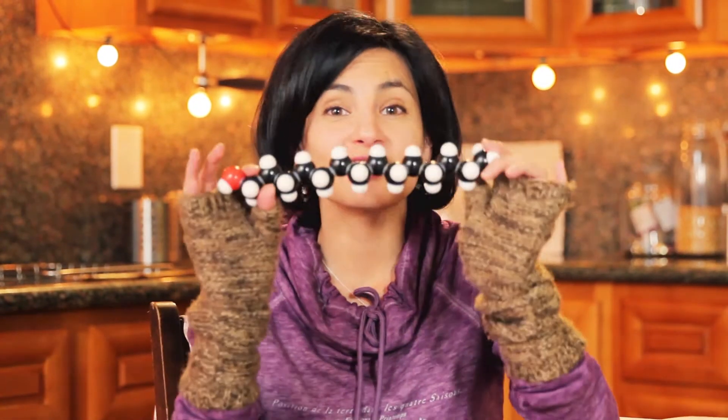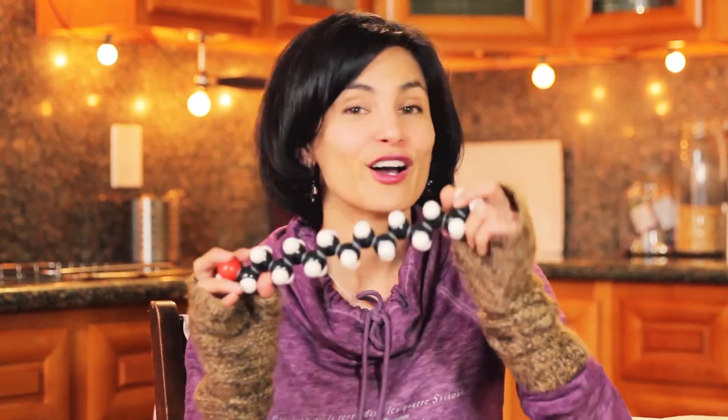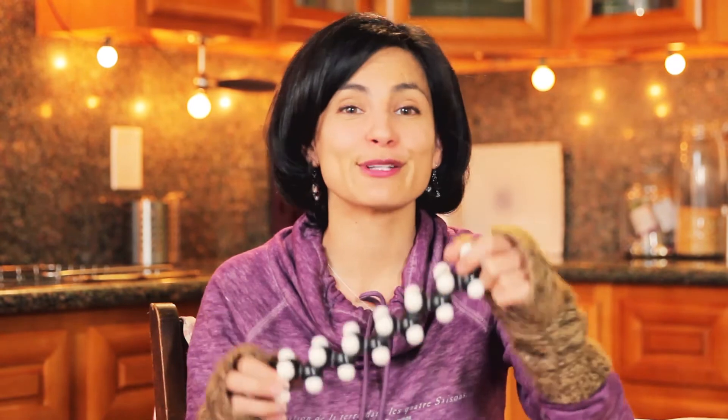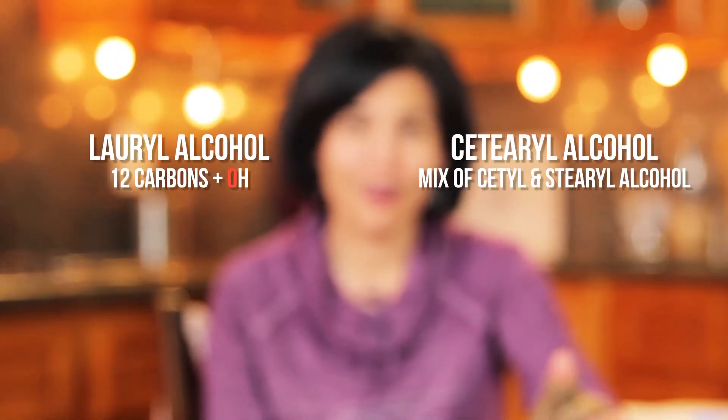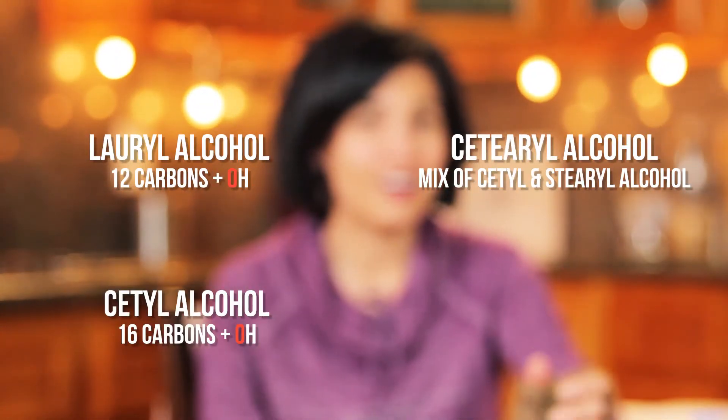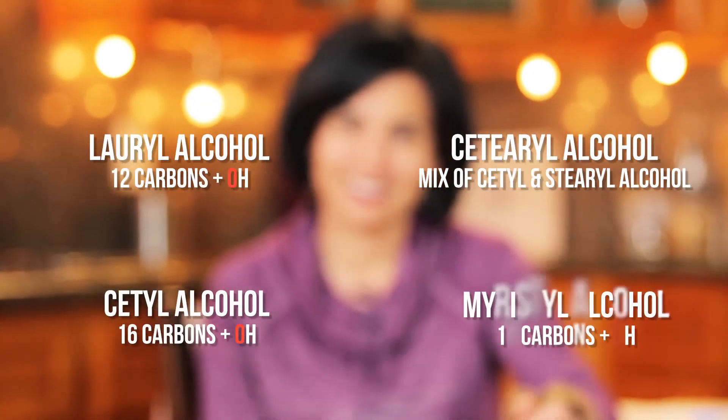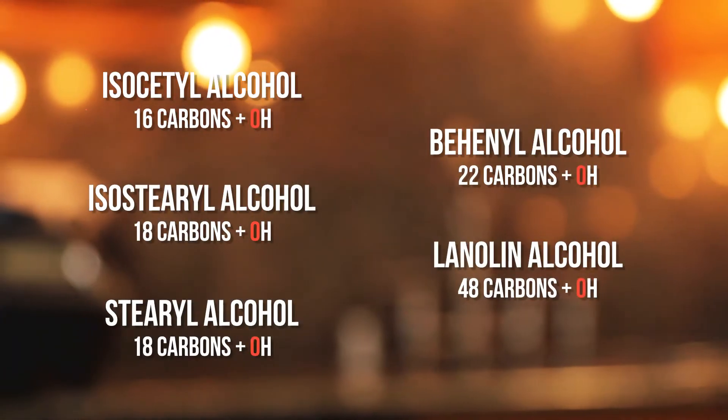How moisturizing they are has to do with the length of the carbon chain. They're long — like 12 carbons or more — and they come from places like plant oils and animal fats. There are ingredients like cetyl alcohol, cetearyl alcohol, cetyl alcohol, and myristyl alcohol. They also include these, so now you know how to find them on the label.